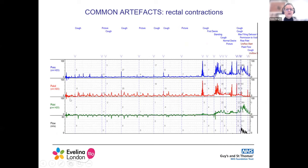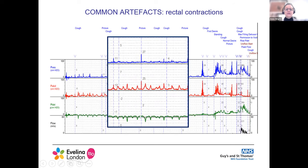This is a common artifact — this was actually in a neurogenic case — repetitive phasic contractions in the abdominal line which aren't present in the vesicle line, representing rectal contractions. When you look more closely, you see a negative deflection in your P-DET line. Sometimes when you get intermittent rectal contractions with slightly higher baseline pressures, you can misinterpret these as detrusor overactivity in your detrusor line.